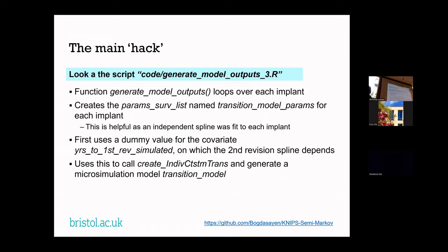Looking at the script generate_model_outputs_3.R: there's a function that loops over each implant and fits a param_surv list for each one independently. The splines for each implant were fit independently to the data — not with covariate adjustment — so there's no proportional hazards assumption. This was not implemented in hesim, which assumed all splines were fit to the same data differentiated by covariates. Independent splines needed to be handled differently.